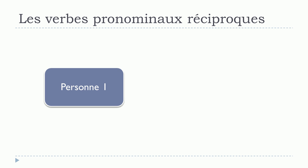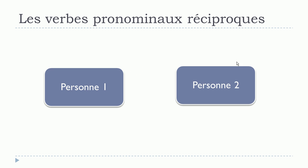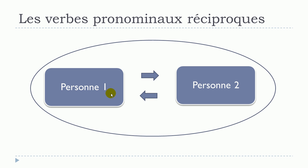The first thing you should keep in mind is that you will need two persons: la personne numéro 1 and la personne numéro 2. The concept is that la personne numéro 1 will do something that will affect la personne numéro 2, and la personne numéro 2 will do something that will affect la personne numéro 1. This is what we call les verbes pronominaux réciproques.